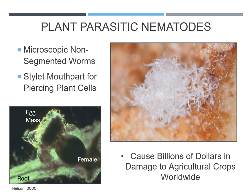Nematodes are non-segmented roundworms that exist in virtually every environment on the earth's surface. Many are free-living beneficial organisms that live in marine ecosystems, while others are important decomposers in the soil. Nematodes can also be parasites of plants, insects, animals, and sometimes humans. Today we will focus on plant parasitic nematodes, which are economically important since they can cause severe damage to agricultural crops worldwide, resulting in losses in the billions of dollars.